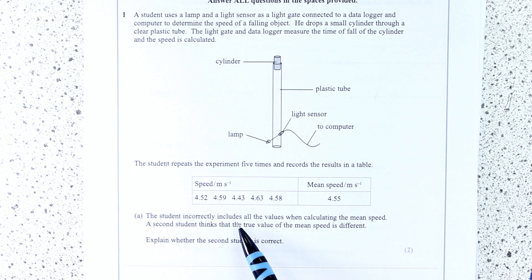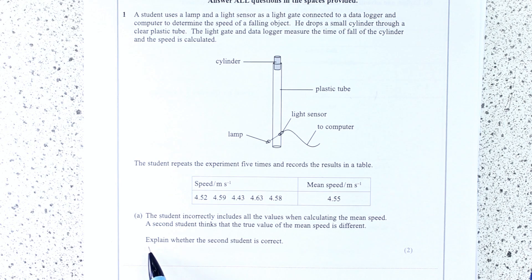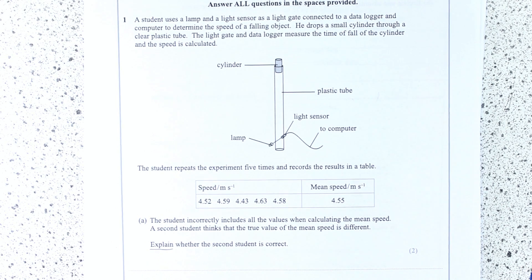Student incorrectly includes all the values when calculating the mean speed. So this should be ringing bells. I'm quite confident most of you could do this from your GCSE stuff. A second student thinks the true value of the mean speed is different. Explain whether the second student is correct.